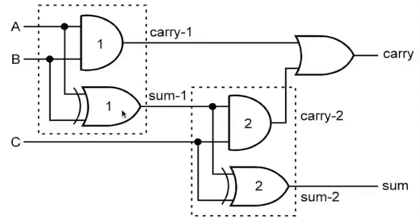Sum one is the output of XOR gate one, with two inputs A and B, so sum one = A ⊕ B. Carry two is the output of AND gate two, with one input connected to sum one — which has equation A ⊕ B — and the other input connected as C. So carry two = C · (A ⊕ B).